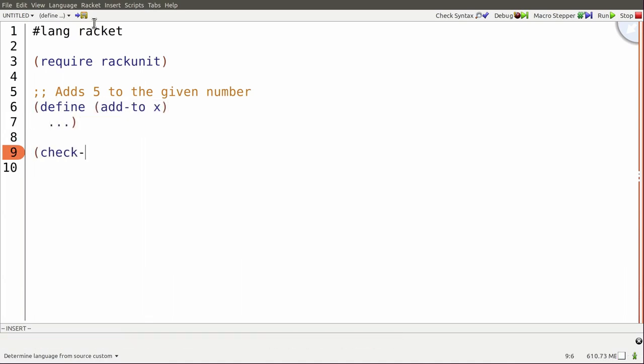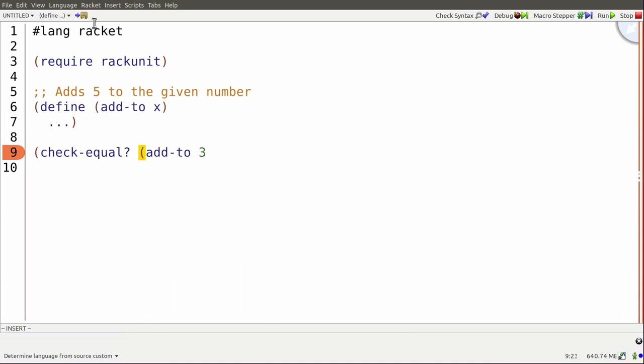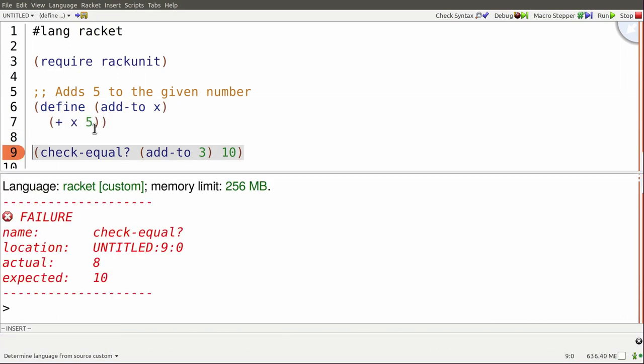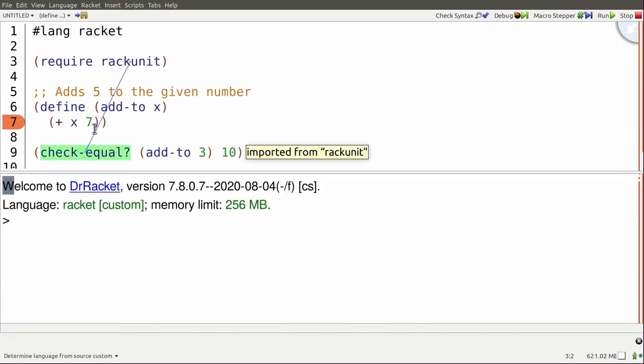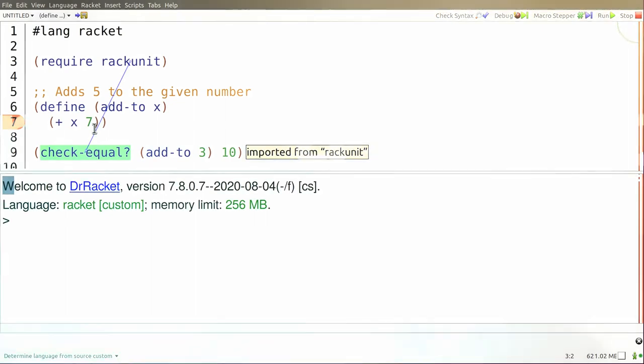First, comments will frequently get out of sync with the code they're describing. Second, developers are still limited to using ASCII to draw their diagrams.